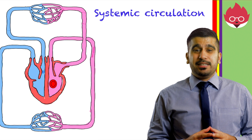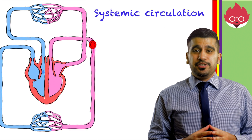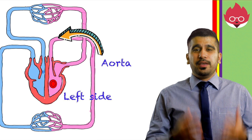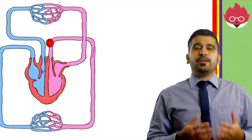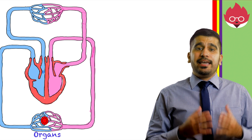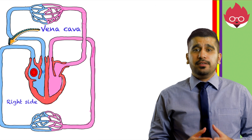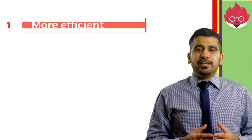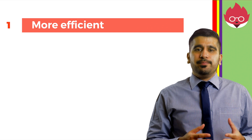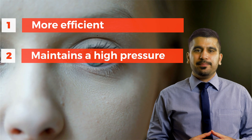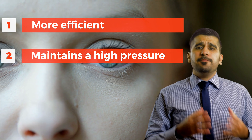The second part of the double circulatory system is the systemic circulation. The oxygenated blood leaves the heart's left side via the aorta, where it is sent around the body. Once oxygen has been deposited, it returns to the right side of the heart via the vena cava as deoxygenated blood. A double circulatory system is more efficient and can maintain a higher pressure than a single circulatory system, which is important for blood moving around an entire human.